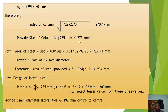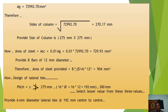Now, area of steel Asc = 0.01 × Ag = 0.01 × 275 × 275 = 756.25 mm² (approximately 729.93 mm²). Provide 8 bars of 12 mm diameter. Area of steel provided = 8 × (π/4) × 12² = 904 mm². Since provided area is greater than required area, the design is acceptable.